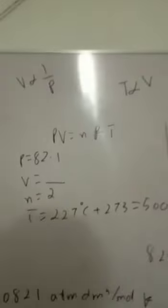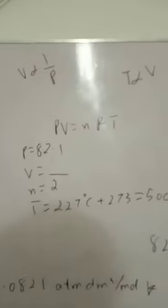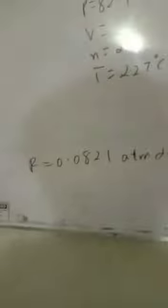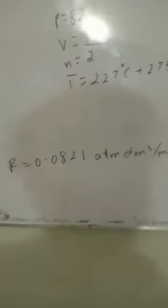So general question, what is PV equal to NRT? Now the value of R is 0.0821 atmosphere dm³ per mole per Kelvin.